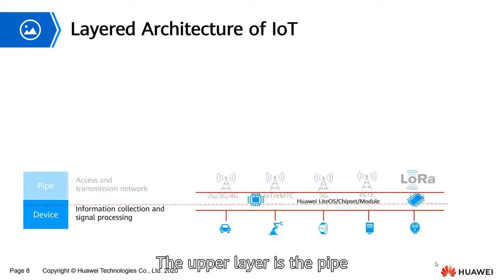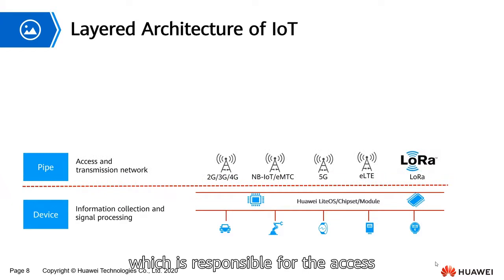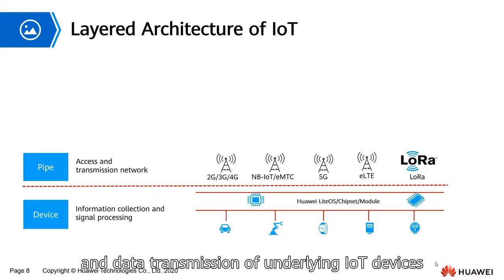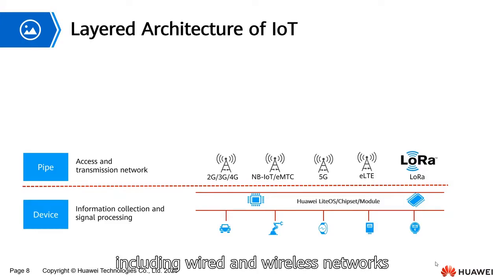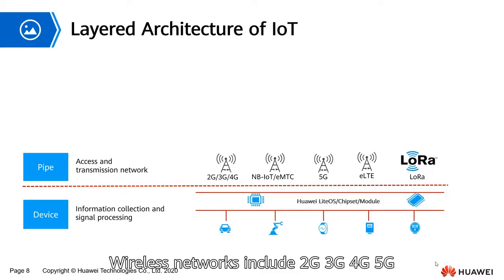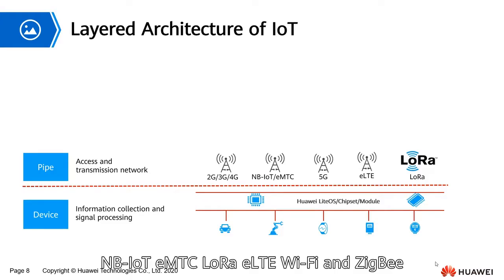The upper layer is the pipe, which is responsible for the access and data transmission of underlying IoT devices, including wired and wireless networks. Wireless networks include 2G, 3G, 4G, 5G, NB-IoT, MTK, LoRa, ELT, Wi-Fi, and ZigBee.